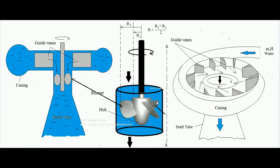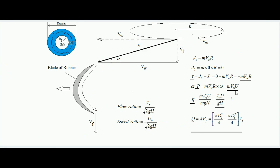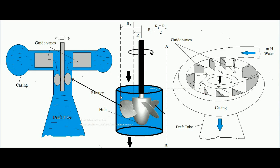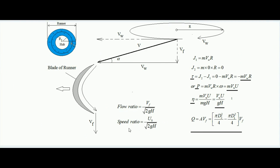Two more important terms for the Kaplan turbine: flow ratio and speed ratio. Flow ratio is defined as the velocity of flow Vf divided by √(2gH), where H is the input head to the runner. Speed ratio is defined as Uo divided by √(2gH), where Uo is the tangential velocity of the tip of the runner — that is, Uo = r2·ω, the tangential velocity at the outermost radius r2. Thank you, I hope you have understood the basics of the Kaplan turbine.